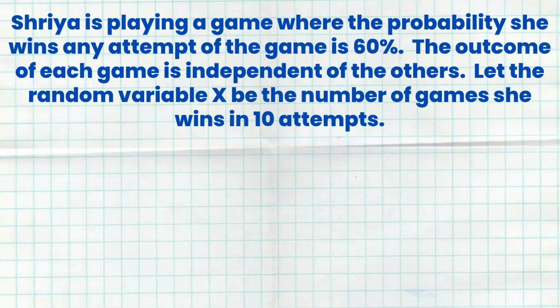So if she has 10 attempts of the game, she could win 0, 1, 2, 3, 4, 5, 6, 7, 8, 9, or all 10 attempts. Any one of those is a possibility. So this is a discrete random variable because I just listed all of the possible outcomes for the random variable.